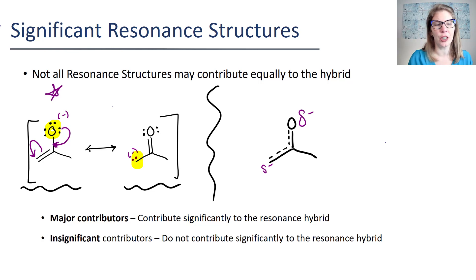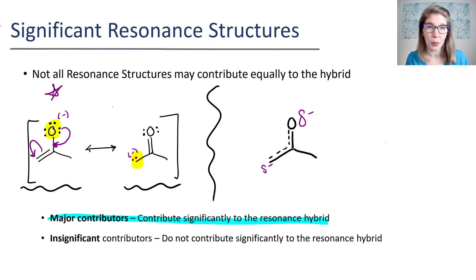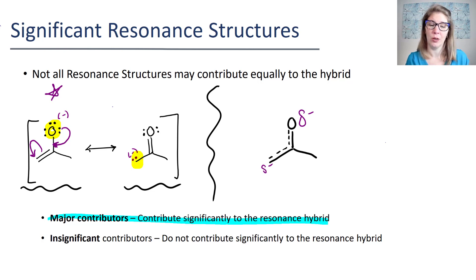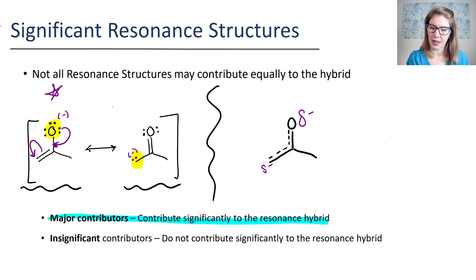Now they're both something called major contributors. Major contributors are structures that we will draw in our resonance structure set because they contribute to the hybrid. But not every resonance structure that we're capable of drawing is going to actually contribute to the hybrid. Some are called insignificant contributors — they do not really show how the electron density is sitting in the molecule and so we don't draw them. What I want to do is take a couple of moments and talk about what our goals are for drawing resonance structures, what makes one structure more significant than another, and what makes for an insignificant structure.